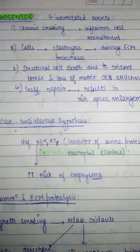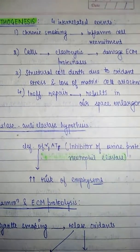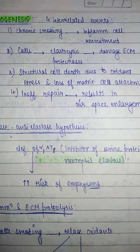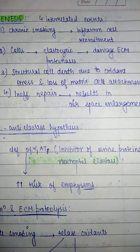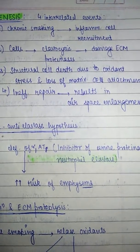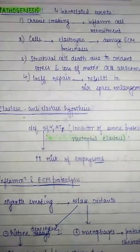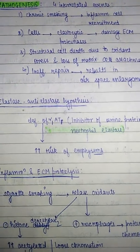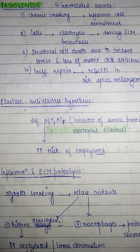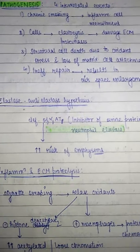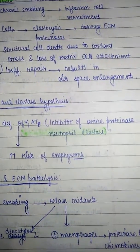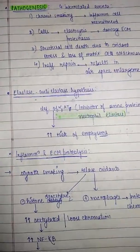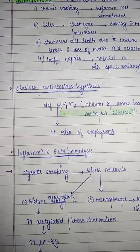There are four interrelated events in the pathogenesis of emphysema: chronic smoking leads to inflammatory cell recruitment; cells secrete elastolytic proteinases which damage the extracellular matrix; structural cell death due to oxidant stress and loss of matrix cell attachment; and ineffective repair results in airspace enlargement. The elastase/anti-elastase hypothesis states that deficiency of alpha-1 antitrypsin increases the risk of emphysema, as alpha-1 antitrypsin is the inhibitor of serine proteinase neutrophil elastase.